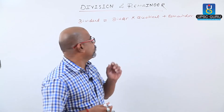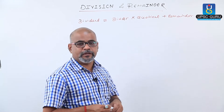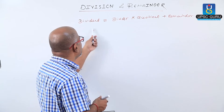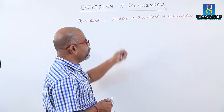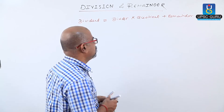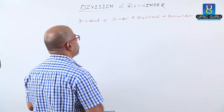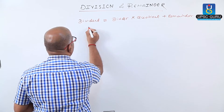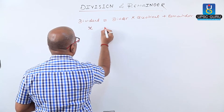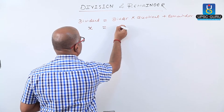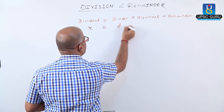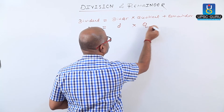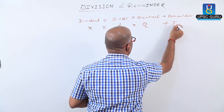We now go for the application of division and remainder. We know that dividend equals divisor into quotient plus remainder. This is given by: X is the dividend, D is the divisor, Q is the quotient, and R is the remainder.